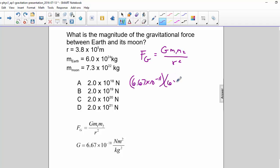m1 is 6 times 10 to the 24th, and m2 is 7.3 times 10 to the 22nd. And r is 3.8 times 10 to the 8th.